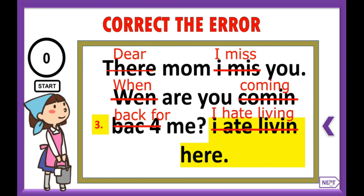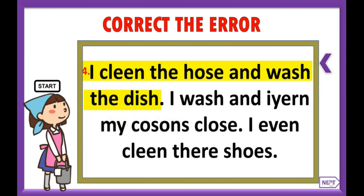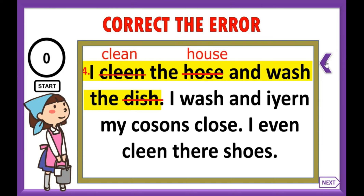Let's move on to sentence number four: 'I clean the house and wash the dishes.' The errors are 'clean,' 'house,' and 'dish.' 'Clean' should be C-L-E-A-N, 'house' should be H-O-U-S-E. And of course, 'dish' — while spelled correctly — should be pluralized. So the correct sentence is: I clean the house and wash the dishes.